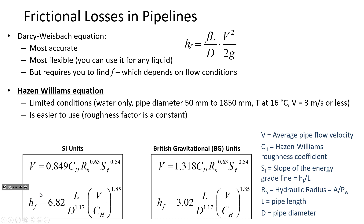We'll use both formulations in an example today — one to solve for velocity, the other to solve for h_f. Practice is important because the Darcy-Weisbach equation takes longer and is unlikely to appear on the FE exam as a three-minute problem. The Hazen-Williams equation is very suitable for those shorter exam questions. It's also good to know because there are still plenty of firms that use it for design.